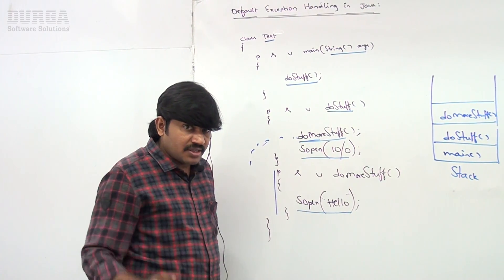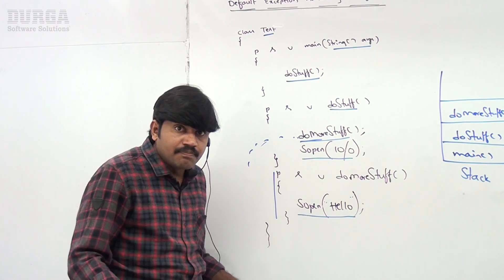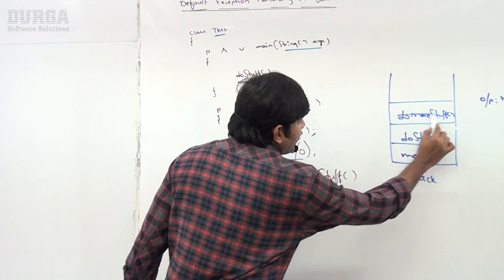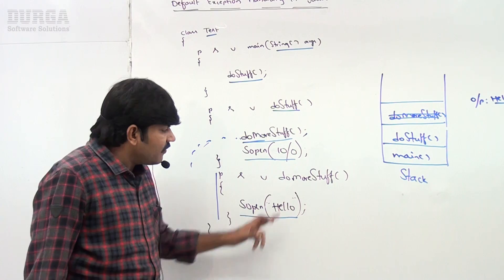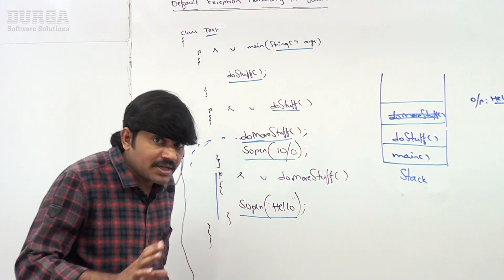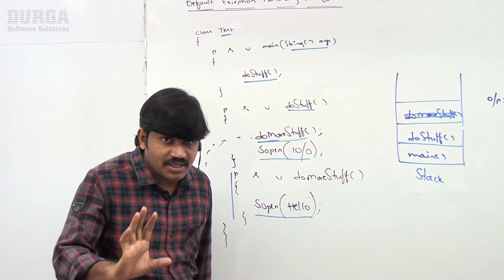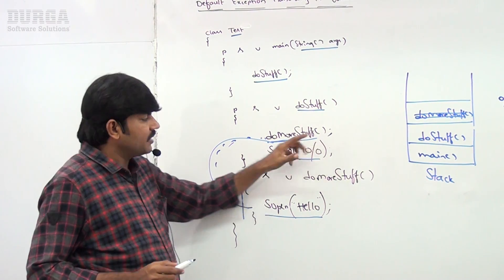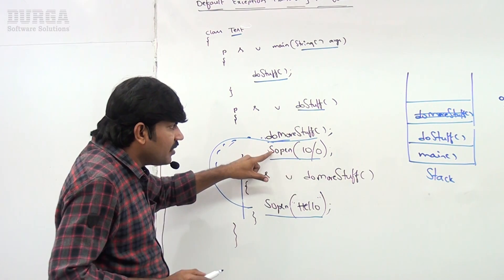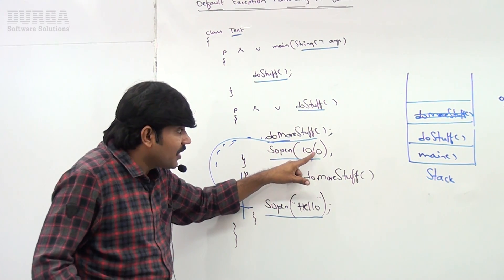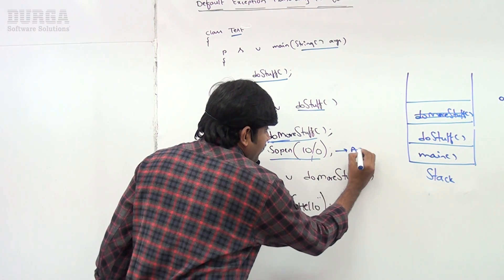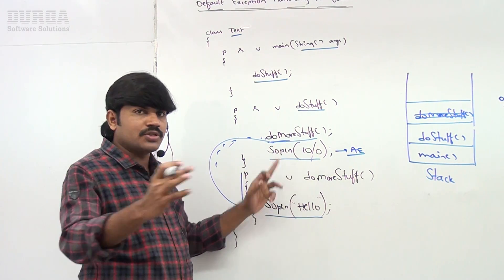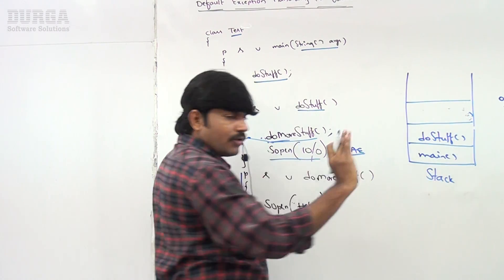Since there are no more statements, doMoreStuff completes normally. When a method completes normally, JVM removes the corresponding entry from the runtime stack. So doMoreStuff has normal termination. Control goes back to doStuff. Now the next statement in doStuff is System.out.println of 10 divided by 0, so an automatic ArithmeticException is raised inside doStuff.